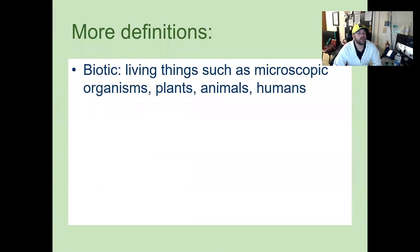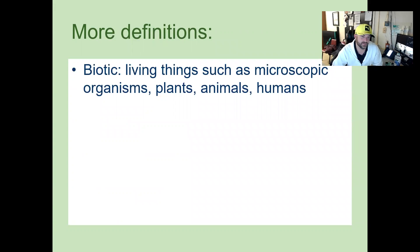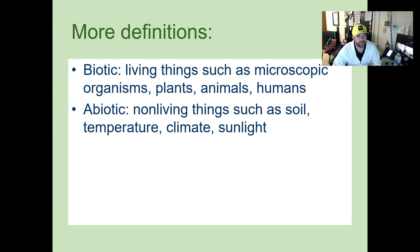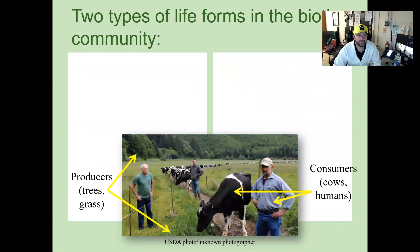Moving on to some more definitions: biotic — we've talked about this at length at this point — which is living things such as microscopic organisms, plants, animals, and humans. Abiotic refers to non-living things such as soil, temperature, climate, and sunlight. And there are two types of life forms in the biotic community.